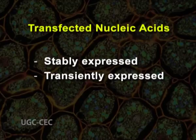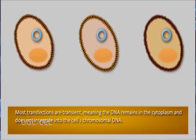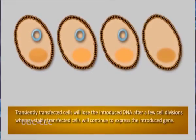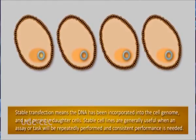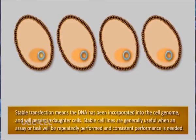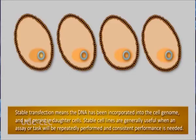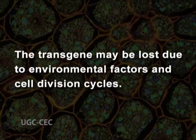Transfected nucleic acids can be stably expressed or transiently expressed. The cells can be stably or transiently transfected depending on the nature of nucleic acid. The transfected cells can be detected by the presence of selectable markers. The inserted DNA or RNA integrates into the host genome in case of stably transfected cells, and the foreign gene is expressed even after cell division. Around 1 in 10 to the power 4 cells get transfected stably. In some cases, transfection is transient, meaning the foreign gene is expressed for a limited period of time, and transiently transfected cells do not pass the transgene to their progeny.